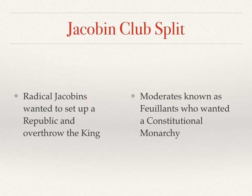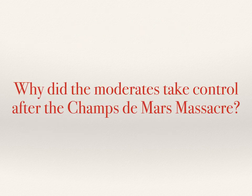there was the first split in the left-wing political group, the Jacobins. There were moderates, known as the Feuillants, who wanted to keep the king and to set up a constitutional monarchy, as opposed to the more left-wing and radical Jacobins who wanted to set up a republic and to overthrow the king. It was the moderates who initially took control of the National Assembly after the massacre at Champs-de-Mars.